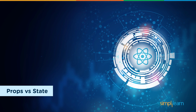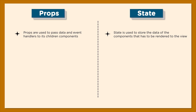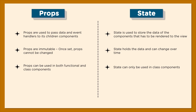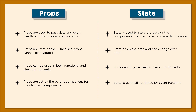Although props and state both dictate and control the behavior of a component, they have significant differences. Props are used to pass data and event handlers to children, while state stores data that has to be rendered on the web page. Props are immutable — once set by the parent they cannot be changed — while state holds volatile data that can change over time. Props can be used in functional and class components, while state is restricted to class components. Props are set by the parent component, while state is generally updated by event handlers.